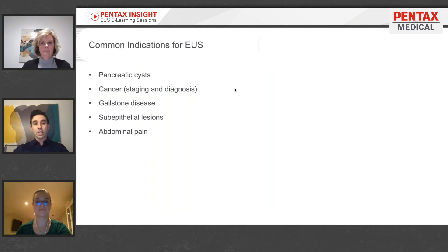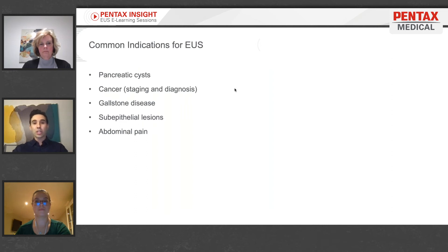Gallstone disease: endoscopic ultrasound has largely revolutionized our management of gallstone disease. We can have very intimate visualization of the gallbladder and the biliary tree, and document with high accuracy the presence or absence of gallstones to help determine what interventions are most appropriate. For example, today we had a young lady with abdominal pain and elevated liver enzymes, and there was a question as to whether she had a common bile duct stone. EUS showed a dilated duct but no stones, so we prevented having to do an ERCP on her and prevented exposing her to risks such as procedural pancreatitis.